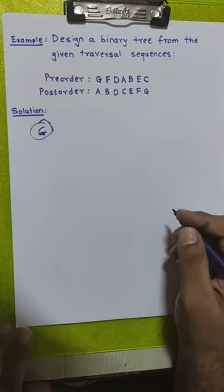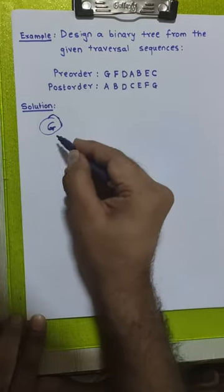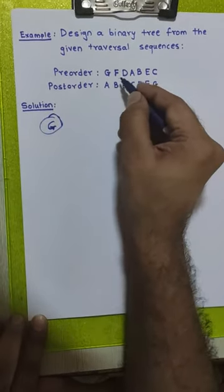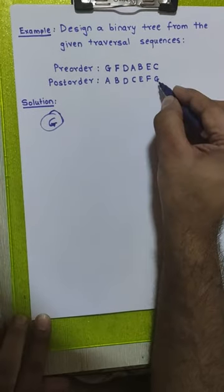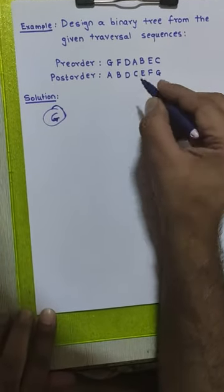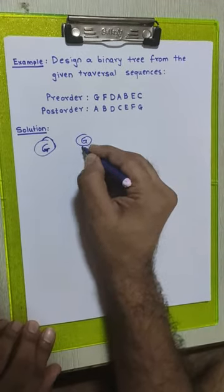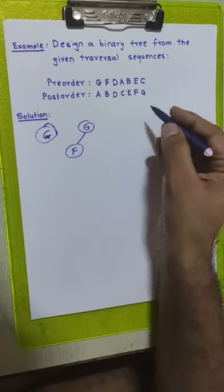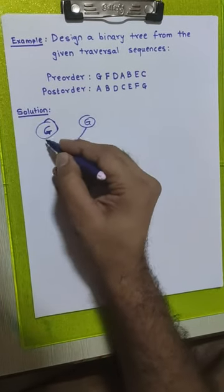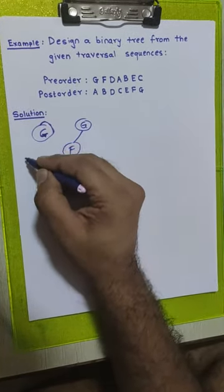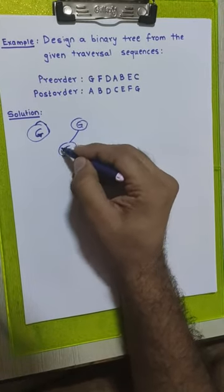After getting the root node, we will take the next element from the pre-order sequence. The element is F, and then we will check it in the post-order sequence where it appears. G is the root node and F is appearing towards the left-hand side of node G, meaning it is part of that subtree, so we draw it to the left-hand side of node G. The rule says: if a node has no left or right child, the coming element is always placed to the left-hand side.